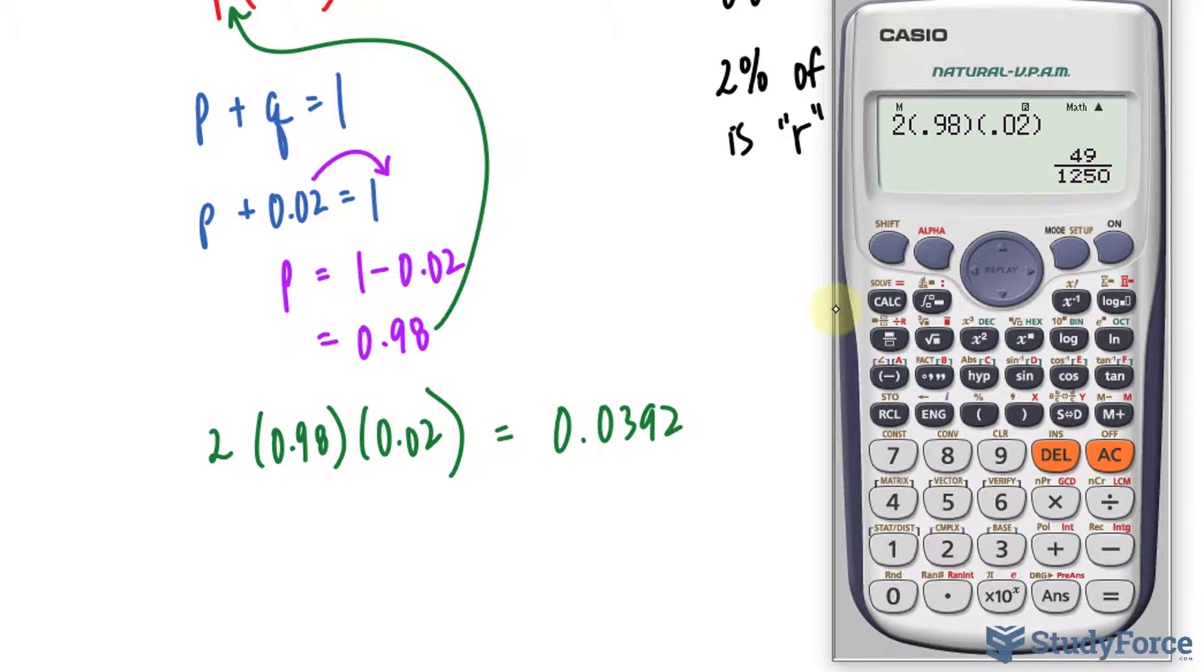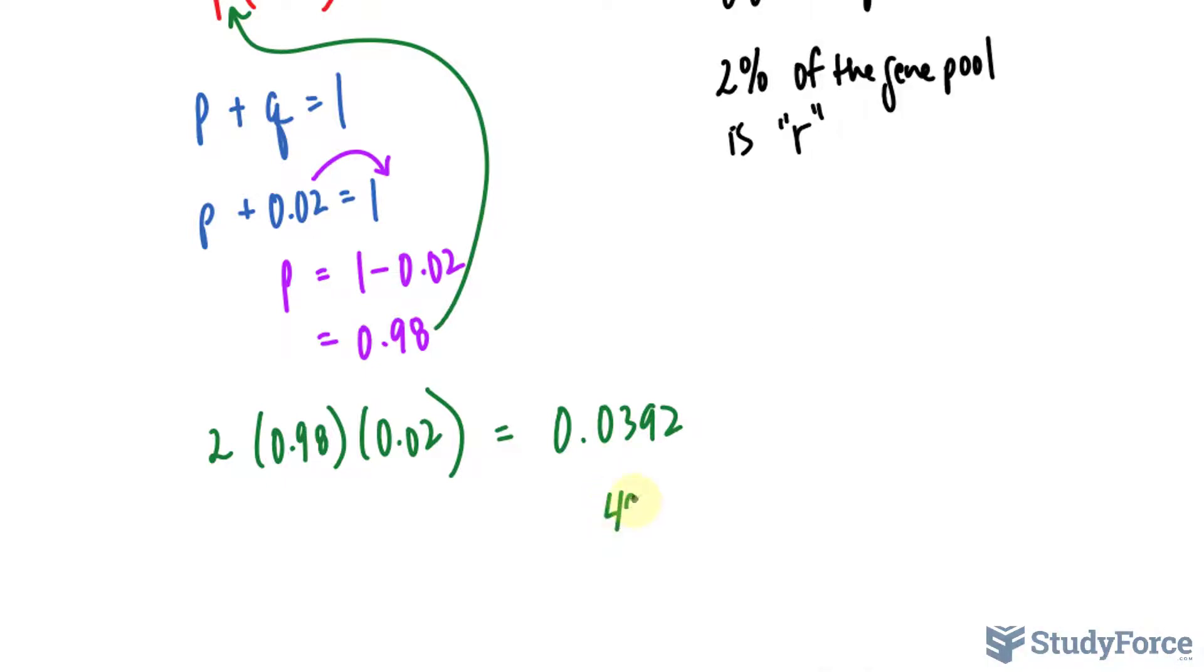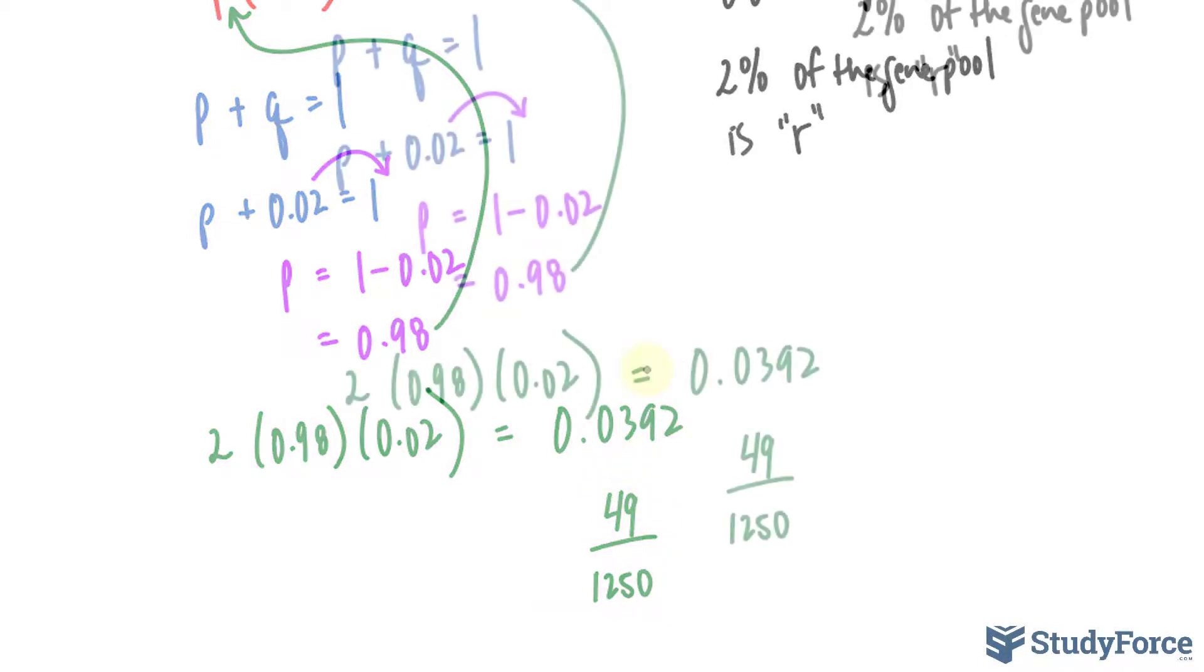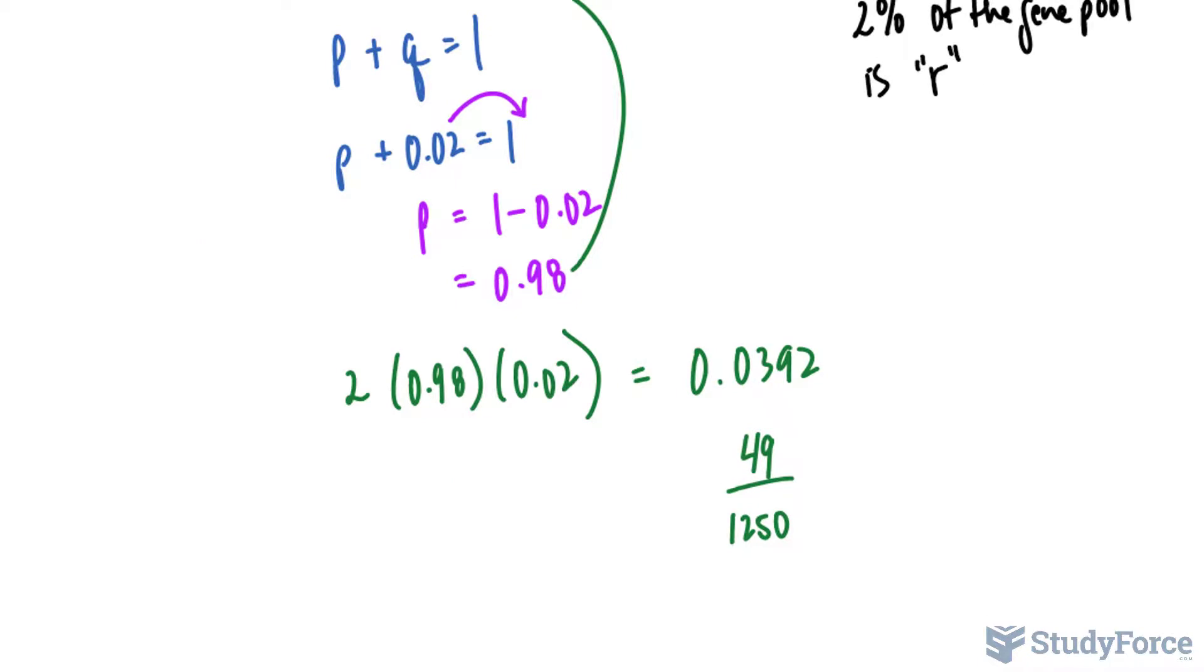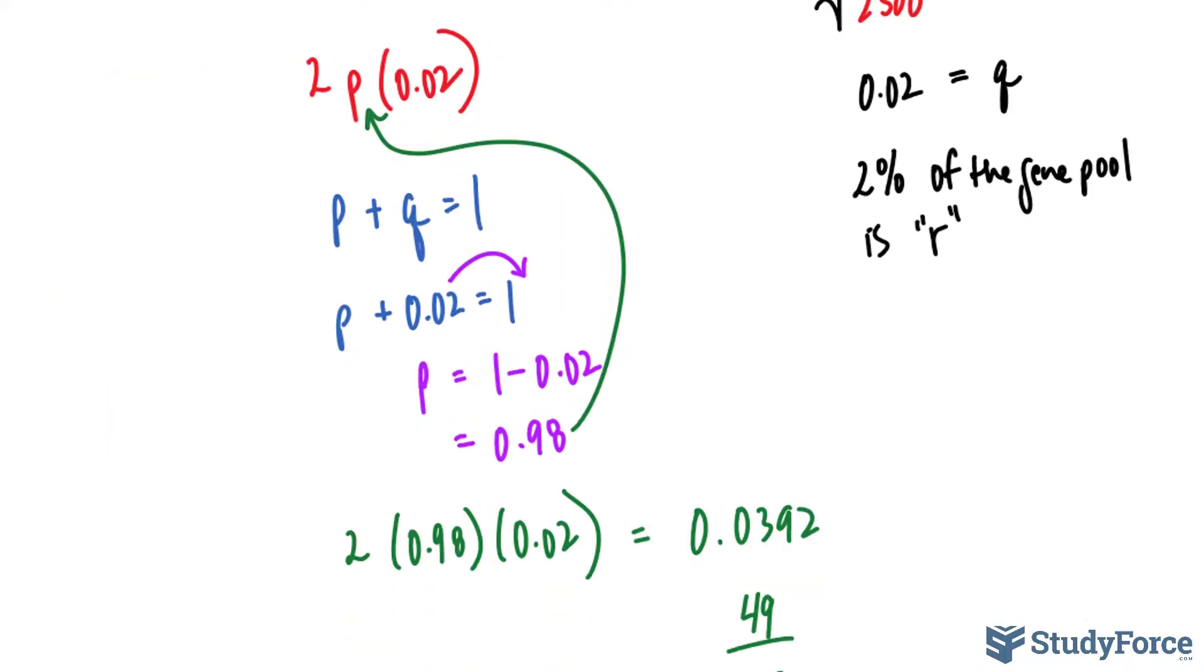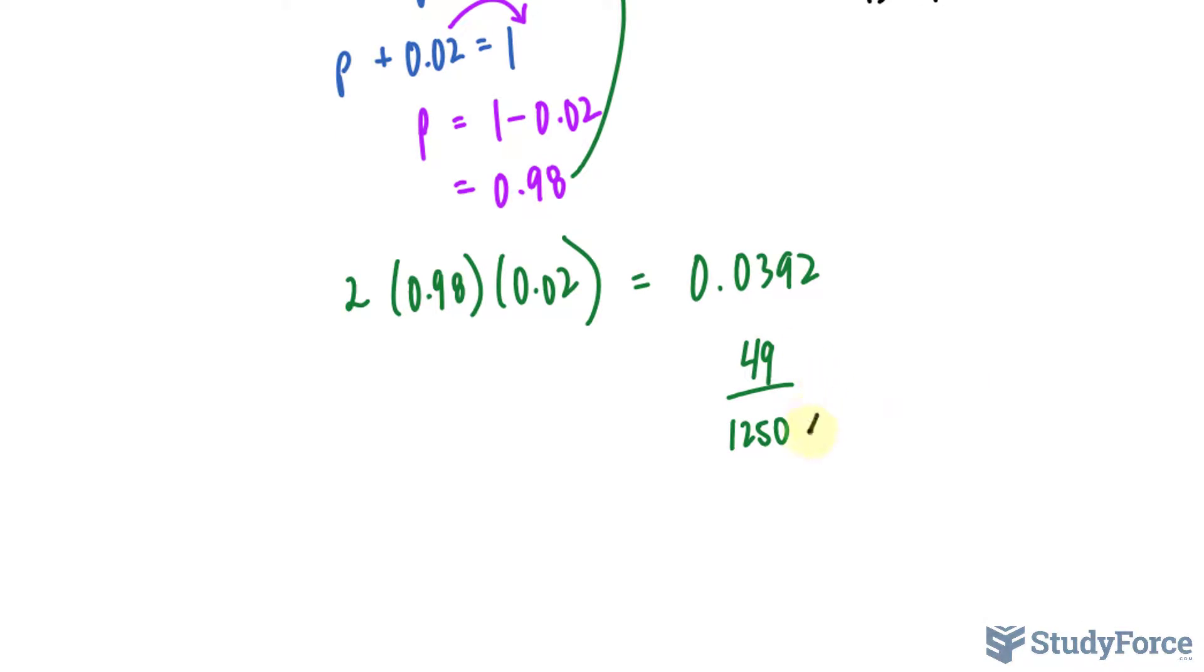Let's interpret that. 49 over 1,250. So out of 1,250 people, 49 would have it. To interpret this number a little bit better, remember the initial population that we started with was 2,500. So multiplying the denominator by 2 and the top number by 2, we should end up with 2,500 as the entire population. 49 times 2 is 98.